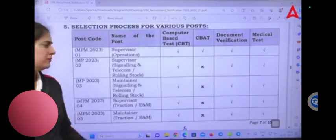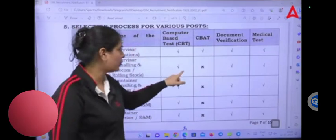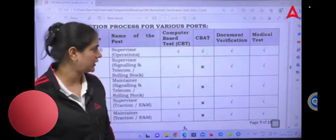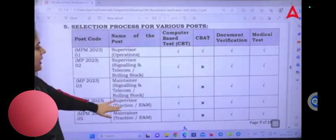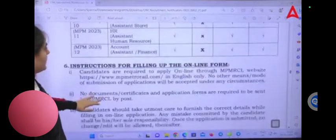Let's talk about the exam pattern. The exam pattern is that only supervisor posts will have two papers—CBT 1 and CBT 2, followed by DV and medical test. For the rest, you will have one CBT and then DV and medical test. Only one post will have two levels of CBT.